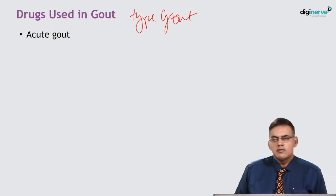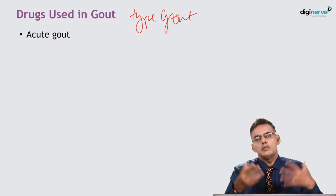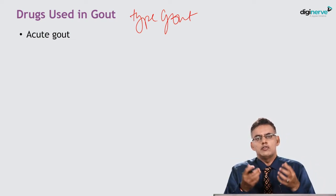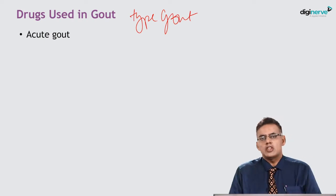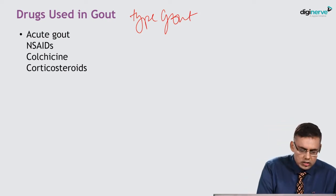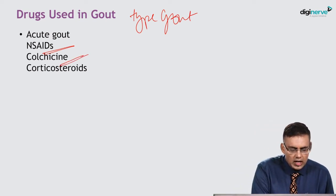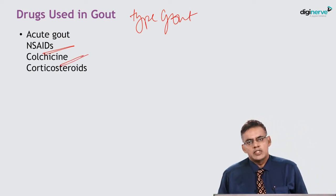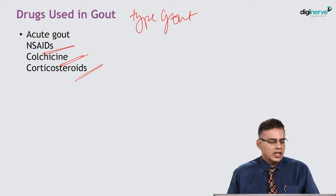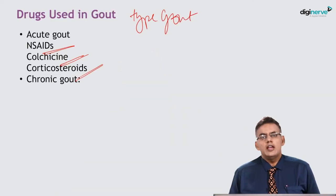In acute gout, there are acute manifestations due to phagocytosis of uric crystals resulting in inflammation. The drugs useful are NSAIDs, colchicine — we have already seen the site of action of these drugs — and corticosteroids, which in limited patients can be used in case of single joint involvement.